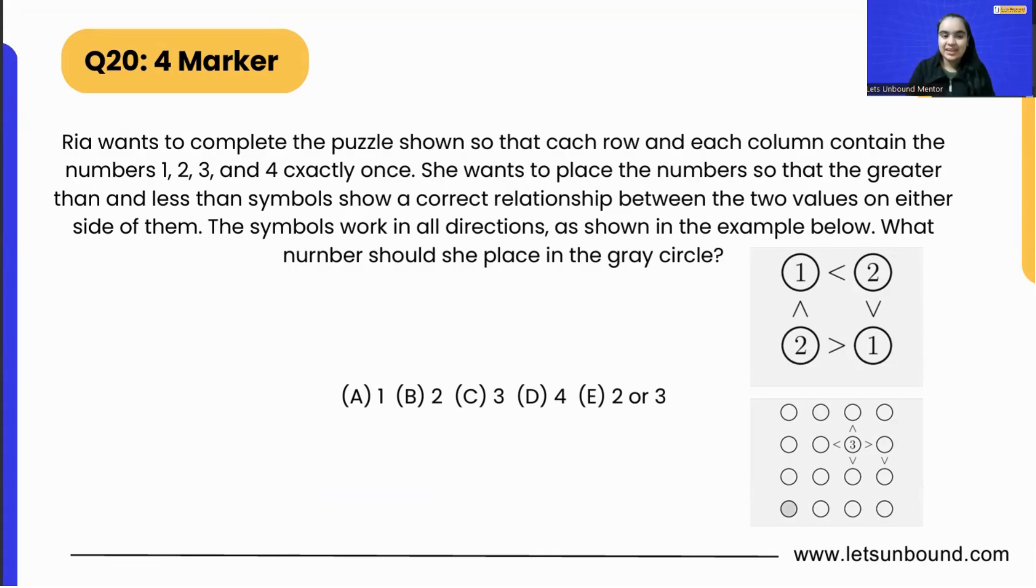Rhea wants to complete the puzzle shown so that each row and each column contains the numbers 1, 2, 3, and 4 exactly once. So in each row and in each column there has to be four numbers - 1, 2, 3, 4 - which occurs exactly once. She wants to place the numbers so that the greater than and less than symbols show a correct relationship between the two values on either side of them.